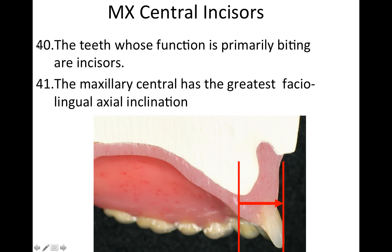Picking up on point number 40, you'll get some questions on the function of teeth, and the function of the incisors is primarily for biting. The maxillary central has the greatest facial-lingual axial inclination — this cross section shows the ridge with the central very axially inclined coming off of that ridge.